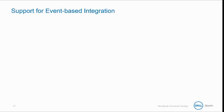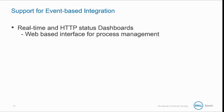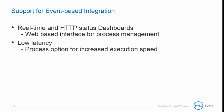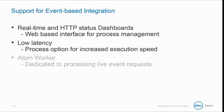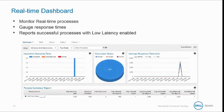A couple of features are available to help manage your system. In AtomSphere, we have the real-time and HTTP dashboards, which provide a web-based interface for process management. The low latency feature is a process option that can be toggled on or off to help increase execution speed. The Atom Worker is a dedicated worker for processing live event-based requests on the Atom. The real-time dashboard displays aggregated low latency process execution information, rather than reporting information about every execution of a low latency process. The summary information appears on the real-time dashboard rather than on the Manage section of the process reporting page.